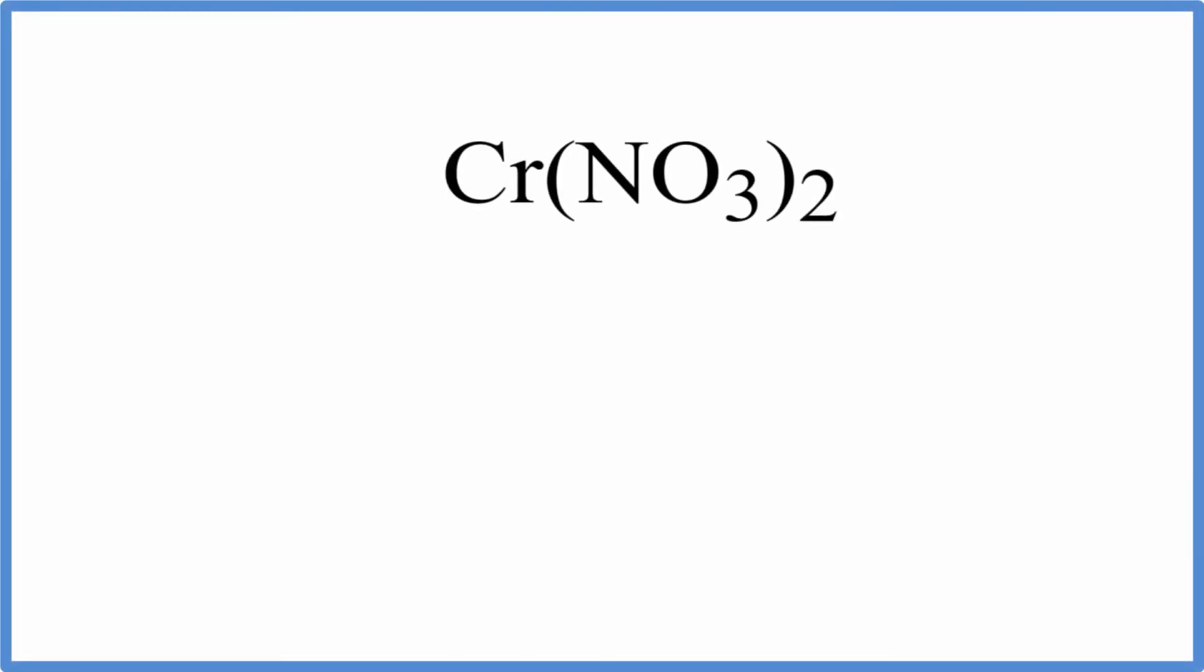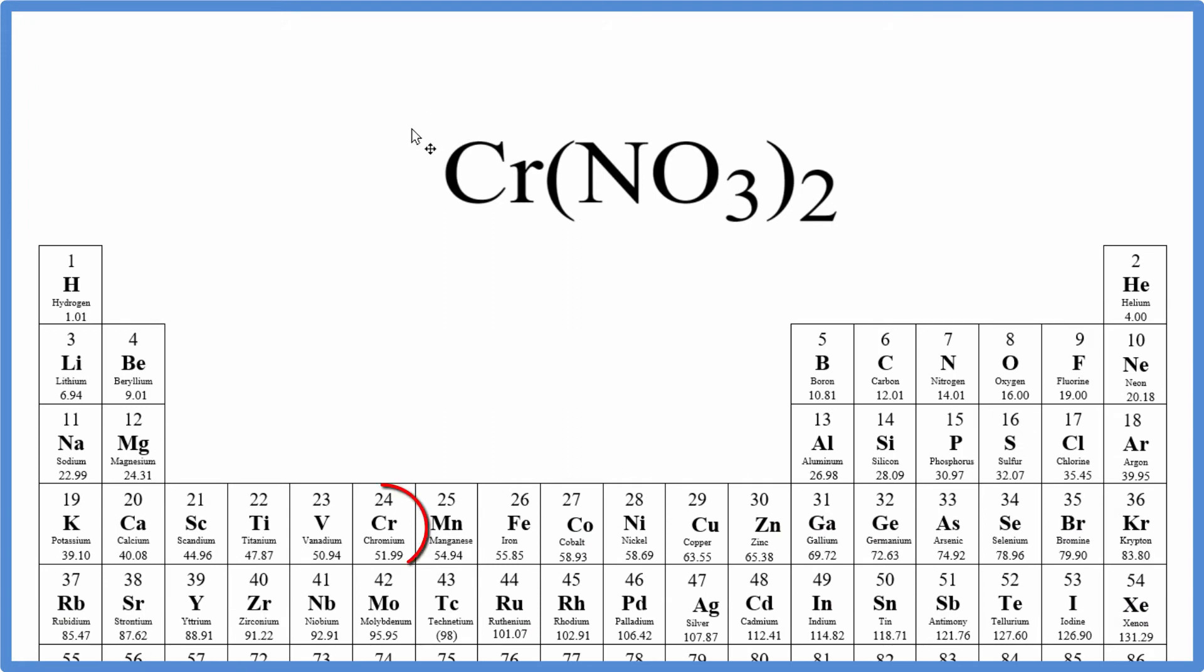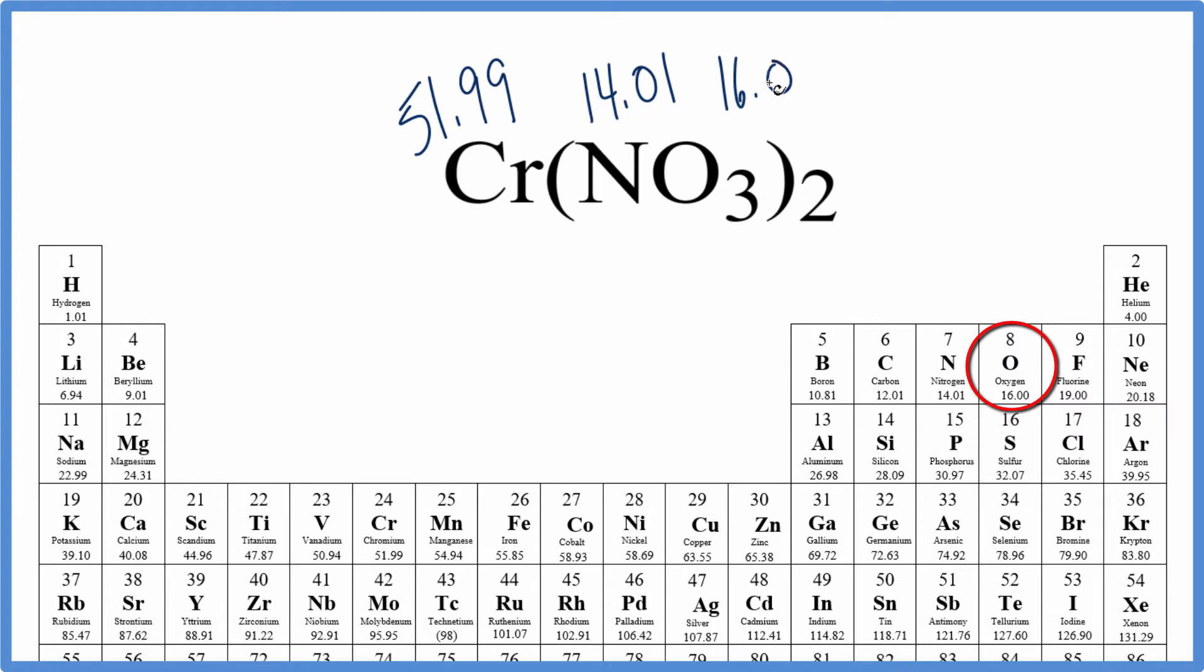To find the molar mass for chromium 2 nitrate, we'll go to the periodic table. We see chromium is 51.99 grams per mole, nitrogen 14.01, and oxygen is 16.00 grams per mole. So we write our chromium,